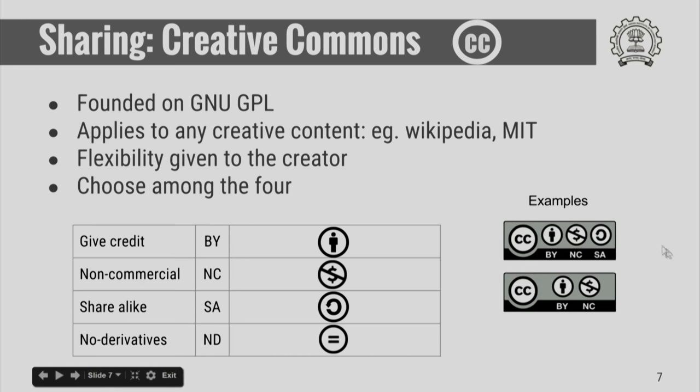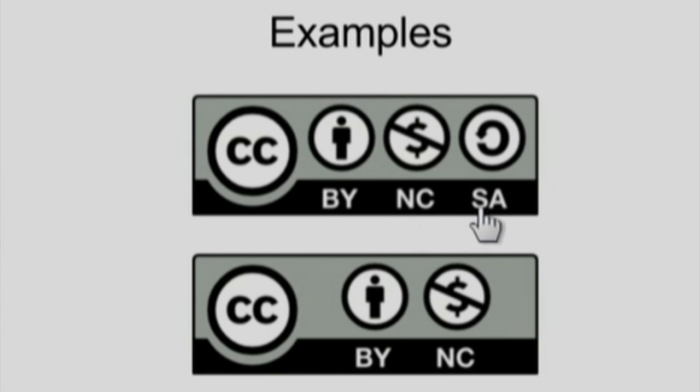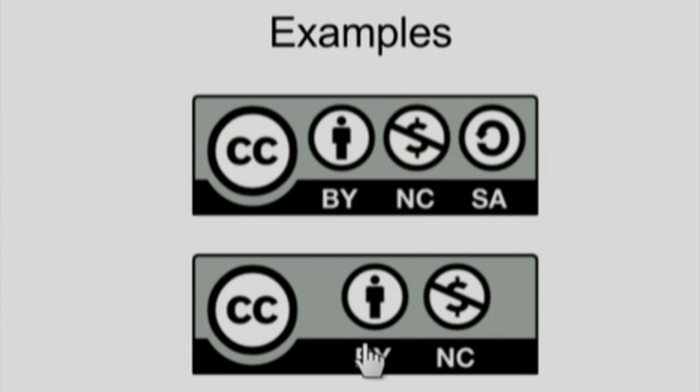These are some examples of creative commons licensing as you will find. If something is written as BY-NC-SA, that means you have to credit the original author, you cannot use it for commercial purposes, and you have to share alike. It could be simply BY and NC — give credit to the original author and do not use it for commercial purposes. Now, find out how this particular video has been shared under creative licensing. Thank you for listening.